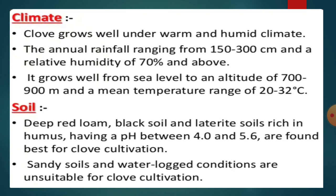Now, regarding climate: clove grows well under warm and humid climate. The annual rainfall ranges from 150 to 300 cm and the relative humidity should be 70% and above. It grows well from sea level to an altitude of 700 to 900 meters, and the mean temperature ranges from 22 to 32 degrees centigrade.